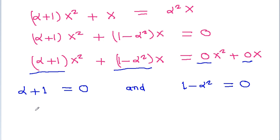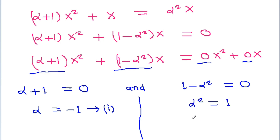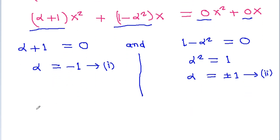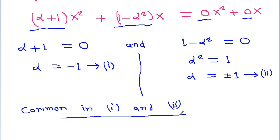From the first equation, we get alpha is equal to minus 1. From the second equation, alpha squared is equal to 1, so alpha is equal to plus or minus 1. The common solution in both equations gives alpha is equal to minus 1.